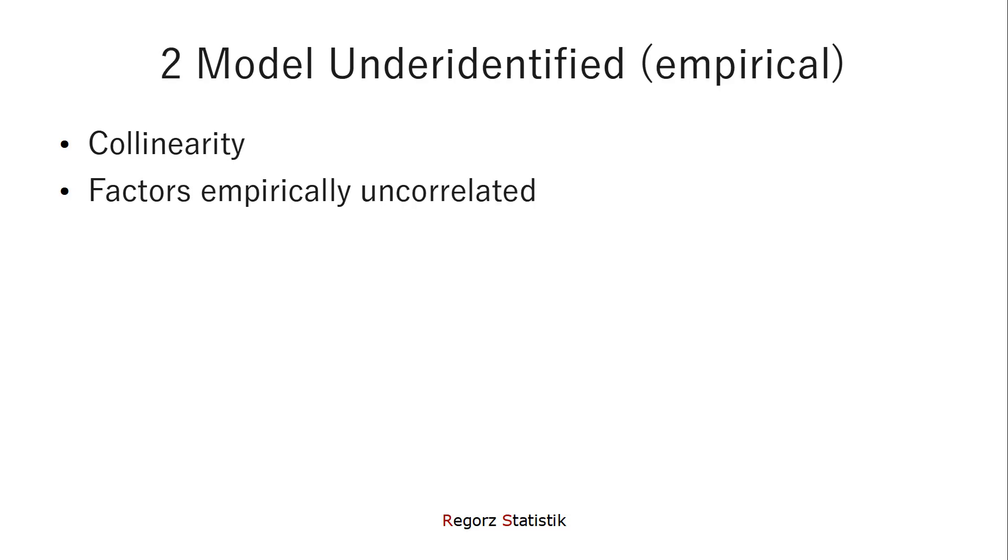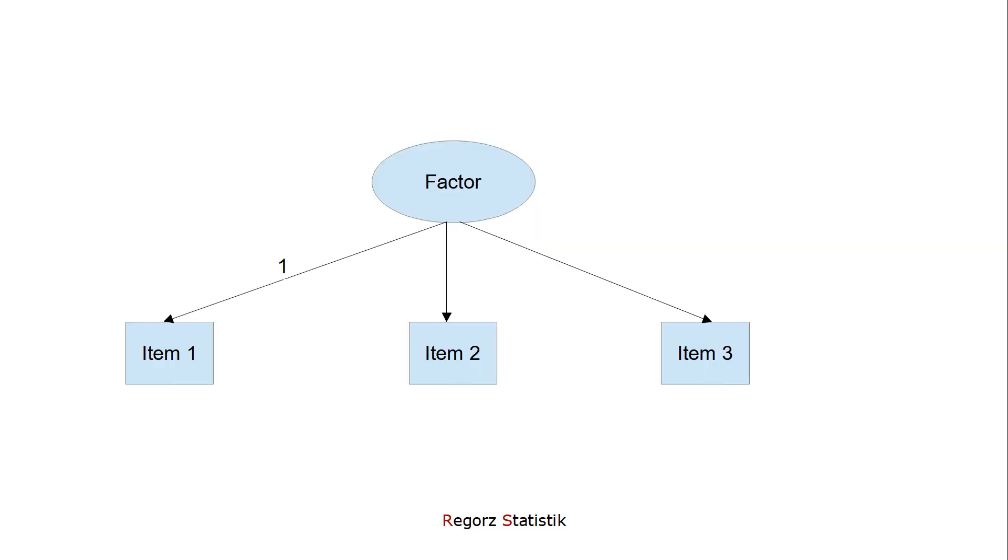A related cause of convergence problems is an empirically under-identified model. There are two possible reasons for that, mainly. Collinearity between items and uncorrelated factors. Let's see why this could lead to problems. This is a measurement model for one factor with three items. Theoretically, this is just identified. So this measurement model has zero degrees of freedom.